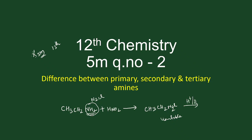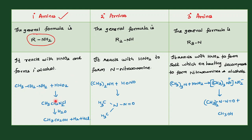If we do acid hydrolysis on the diazonium salt, water reacts and CH3CH2-OH is formed — that is the primary alcohol. So when primary amine reacts with HNO2, it forms primary alcohol. Secondary amine reacts with HNO2 to form N-nitrosamine. How does secondary amine react with HNO2?